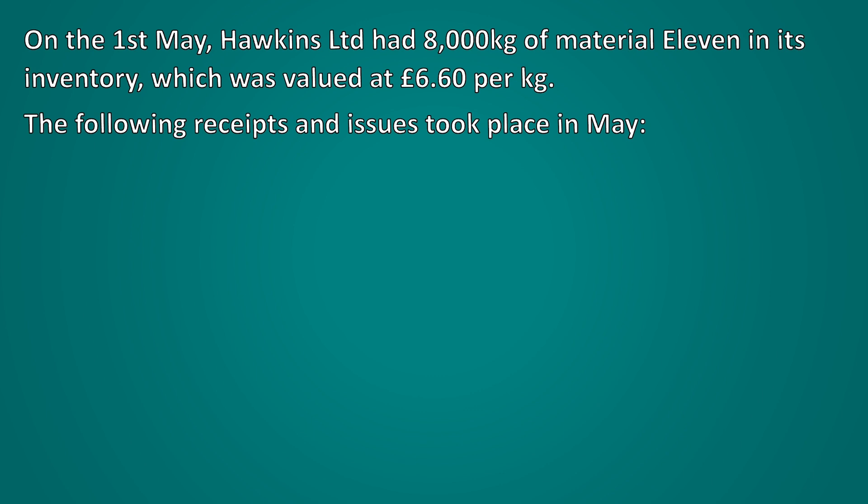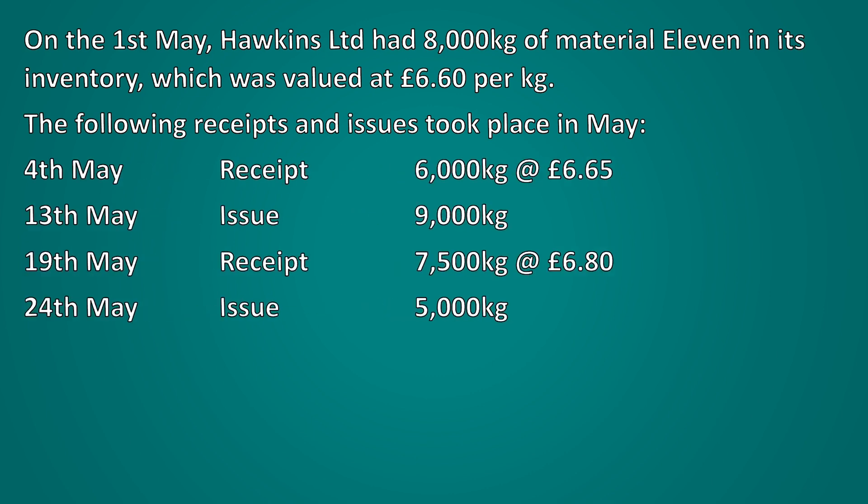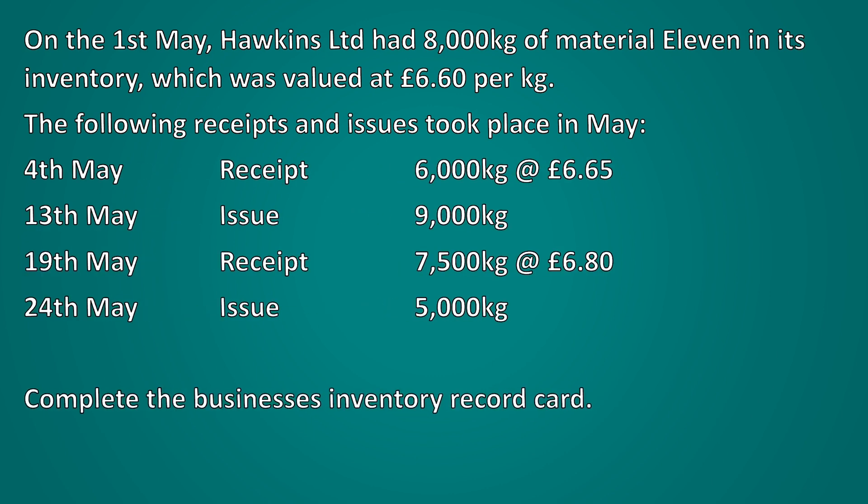Using this template, let's look at how to value inventory based on the last in first out method. On the 1st of May, Hawkins Limited had 8,000 kilograms of material in its inventory, valued at £6.60 per kilogram. The following receipts and issues took place in May. Complete the business's inventory record card.